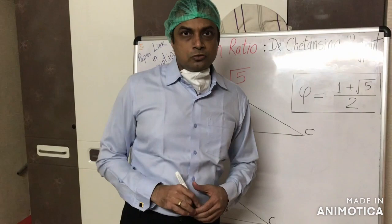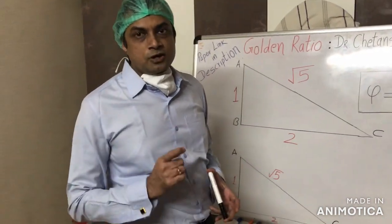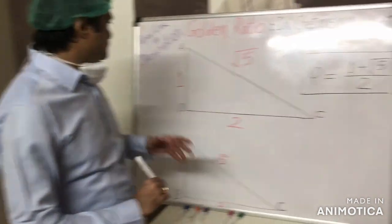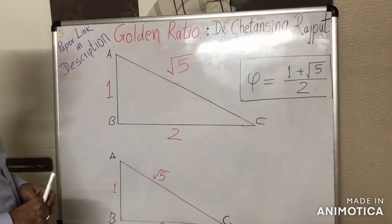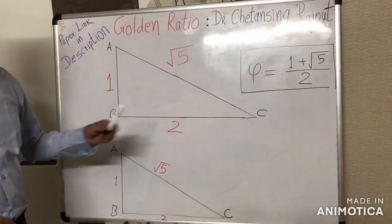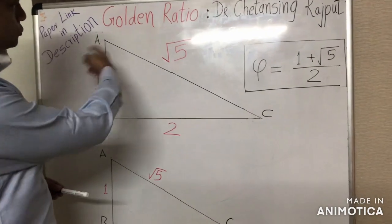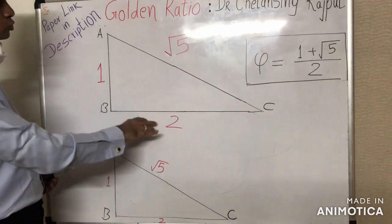The geometry of golden ratio is based upon a special right triangle. This right triangle has its catheti in the ratio 1 to 2. Look at the sides of this triangle: 1, 2, and root 5.